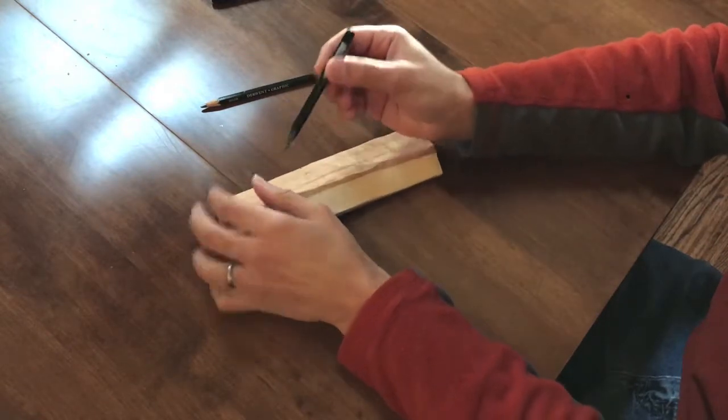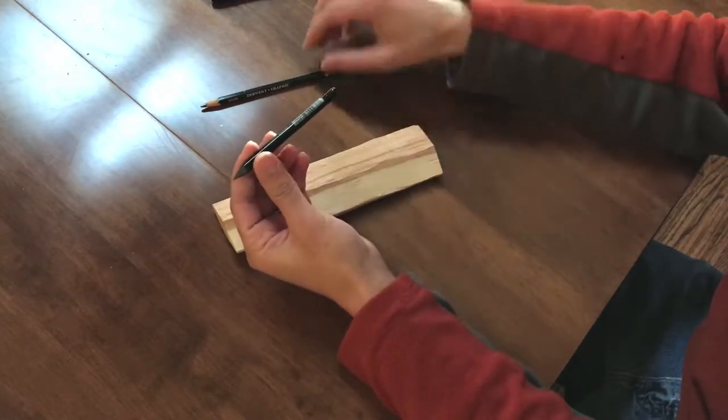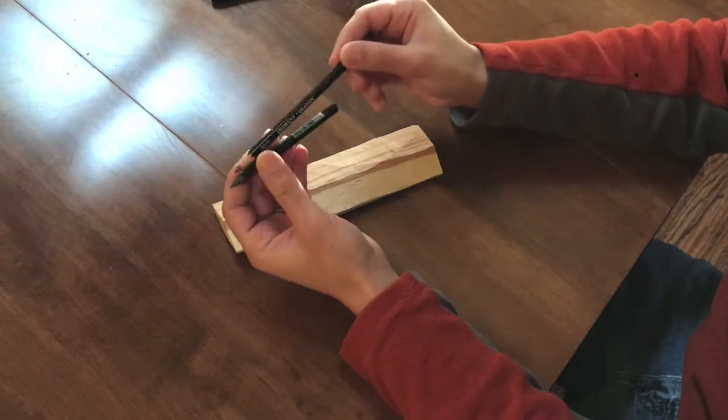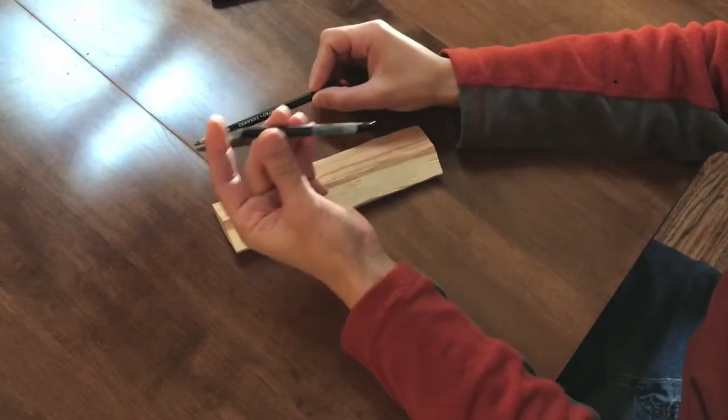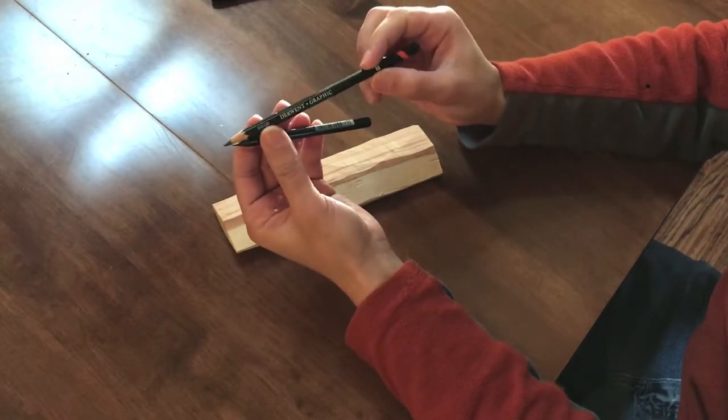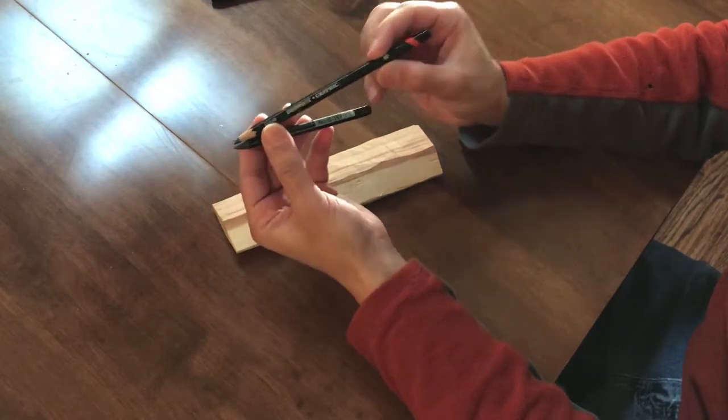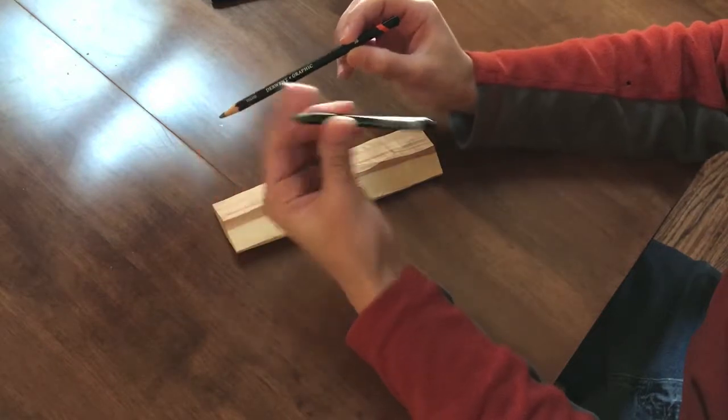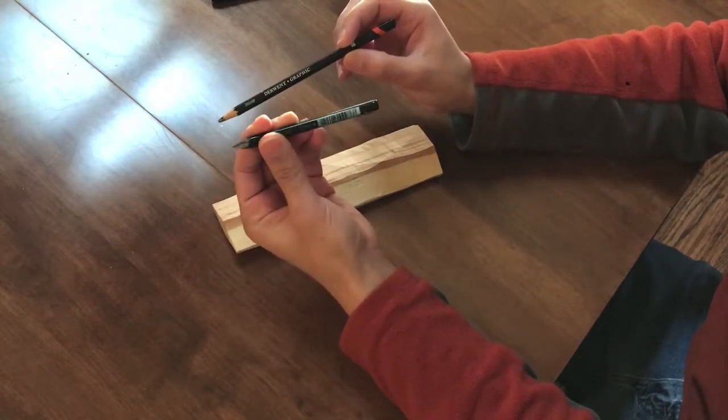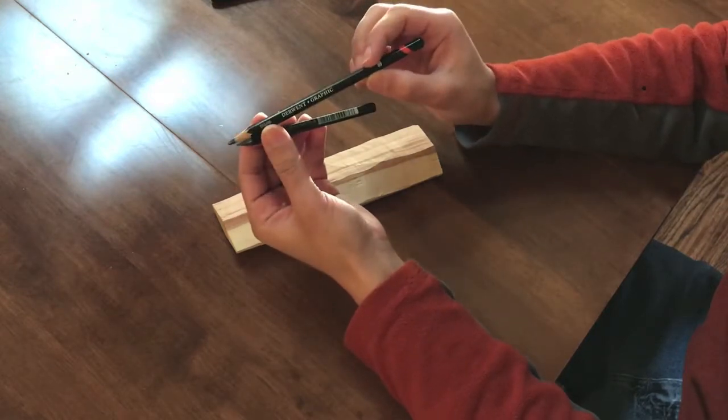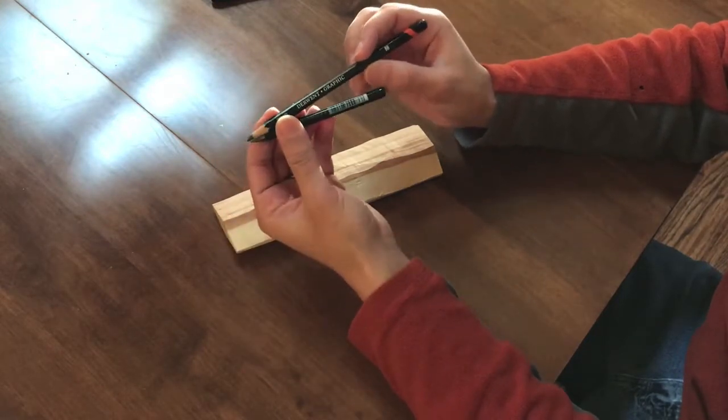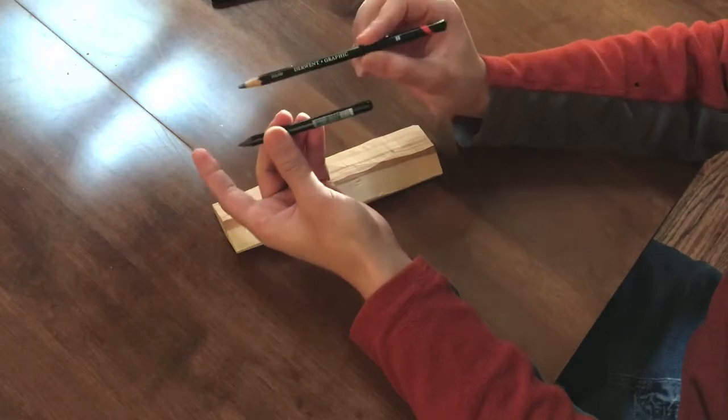This one is a graphite pencil, a woodless pencil. This one's made by General and this one's made by Derwent. Both pencils are fine. This one is an 8B, this one's a 6B. I find that this one lays a little bit of a darker line down than this one, even though it's softer, or I should say harder. But they both work really well.